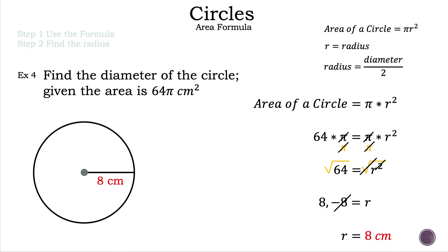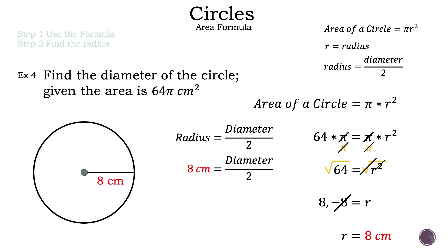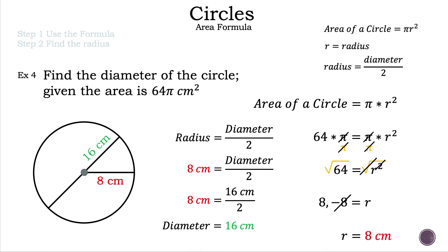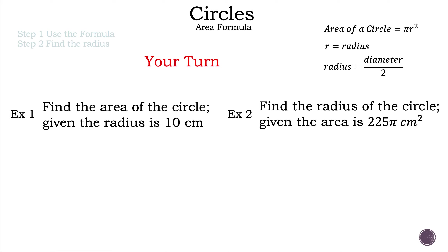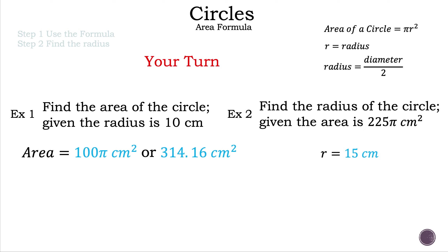The question asked for the diameter, so we have one more step. Using the formula radius equals diameter divided by 2, we substitute the radius of 8 centimeters: 8 equals diameter divided by 2. The diameter is 16 centimeters. Alternatively, multiply the radius by 2: 8 times 2 also equals 16. So the diameter is 16 centimeters when the area is 64 pi centimeters squared. Now it's your turn — pause the video, answer the questions, and the answers will be revealed in three, two, one.